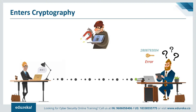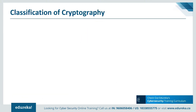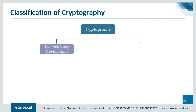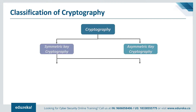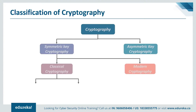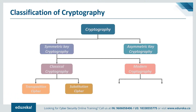In modern cryptography, the security of the system purely relies on keeping the encryption and decryption keys secret. Based on the type of keys and encryption algorithms, cryptography is classified into two broad categories: symmetric key cryptography and asymmetric key cryptography, also known as public key cryptography. Symmetric key cryptography is further classified as classical cryptography and modern cryptography. Classical cryptography is divided into transposition cipher and substitution cipher, while modern cryptography is divided into stream cipher and block cipher.